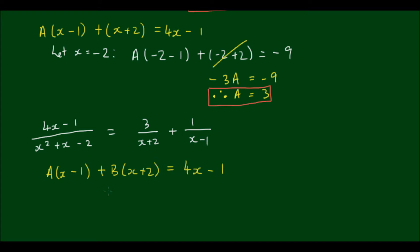And if I expand these through, I will get Ax minus A plus Bx plus 2B is equal to 4x minus 1.